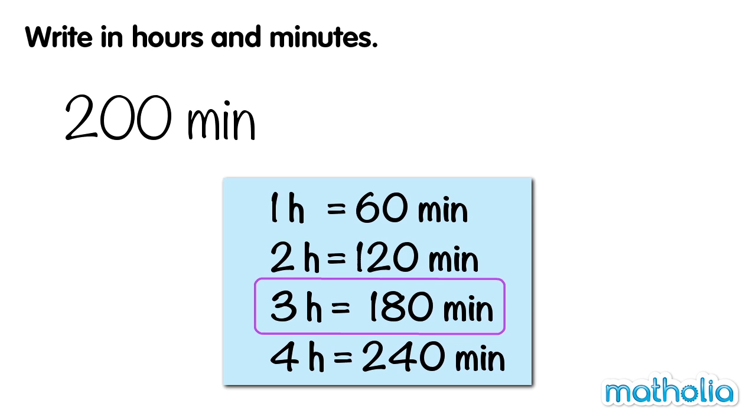3 hours equals 180 minutes. 180 minutes is close to 200 minutes. So we can write 200 minutes equals 180 minutes plus 20 minutes.